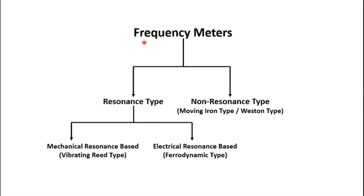In the distribution system, a variation of frequency of not more than 0.5 Hz to 1 Hz is allowed. So if 50 Hz is the nominal frequency, then 49.5 to 50.5 Hz is what is allowed. Previously it was 48.5 to 51.5 Hz, so over a period of time this range has become even stricter.